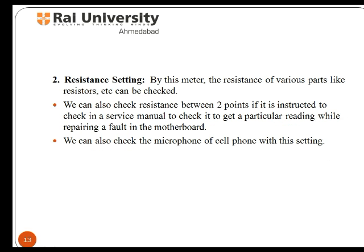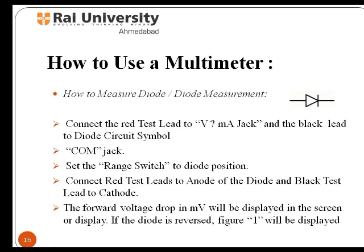Another multimeter setting is the resistance setting, in which the resistance of various parts like resistors can be checked. We can also check resistance between two points if instructed to do so in a service manual to get a particular reading while repairing a fault. A multimeter is an instrument used to check for AC or DC voltages, resistance, and continuity of electrical components.